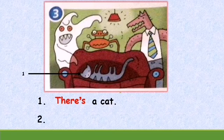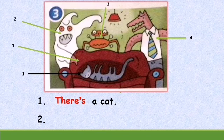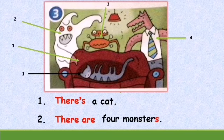Second sentence: how many monsters can you see? Let's count together — one, two, three, four. Four monsters! Is it singular or plural? Yes, plural nouns. So begin with 'there are': there are four monsters. Now let's read together — number one: there's a cat. Number two: there are four monsters.